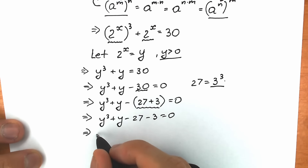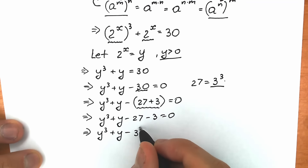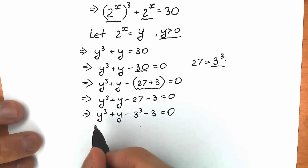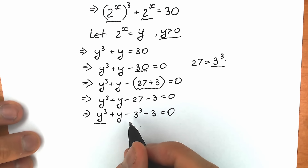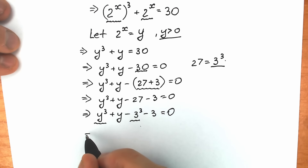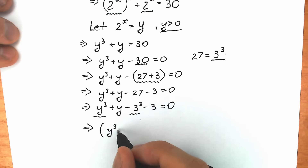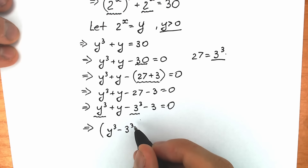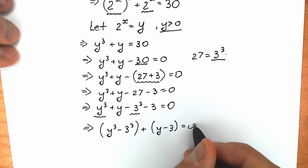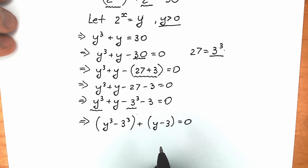So instead of 27, let's write 3 cubed. We have y cubed plus y minus 3 cubed minus 3 equal to zero. Now let's group y cubed and 3 cubed. As a result, in the first parenthesis we have y cubed minus 3 cubed, and we have plus y minus 3. We've grouped it — we have the third power in the first parenthesis and the first power in the second parenthesis.